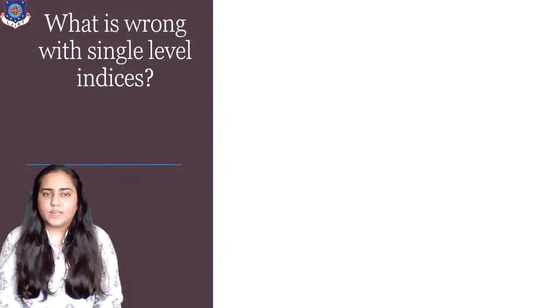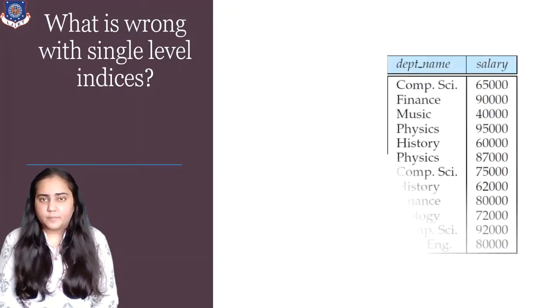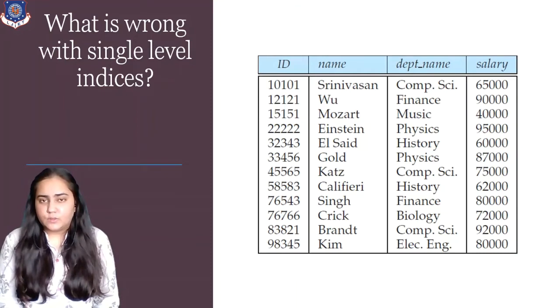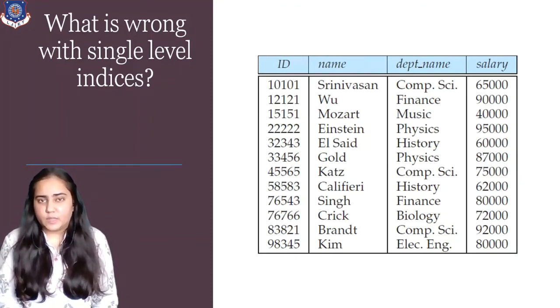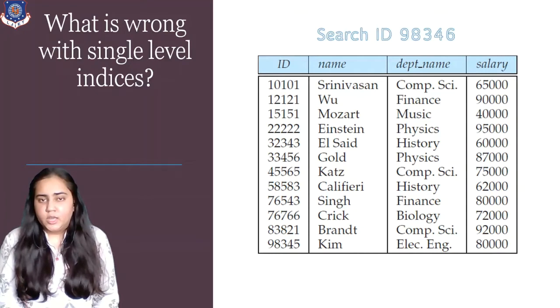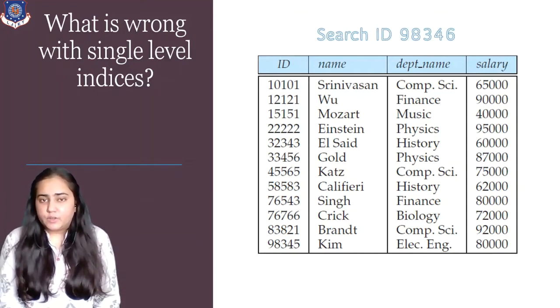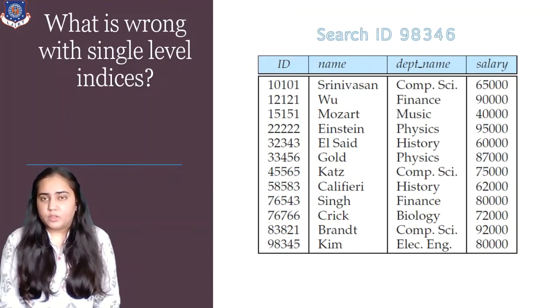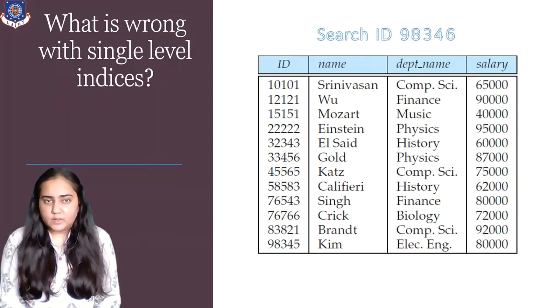Now we're going to see what exactly is wrong with a single level index. A single level index is also useful, but when it comes to searching for something, for example, I want to search for an ID 98345, then with a single level index, I have to start from the beginning and keep searching till I reach the end. And suppose I want to search for 98346, then even after looking at each and every row of the table, I will not be able to find this ID since it does not exist. So this is the disadvantage of having a single level index, having to go through the entire table for no reason at all.